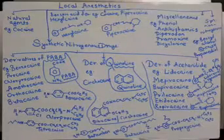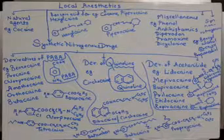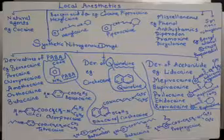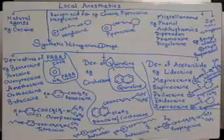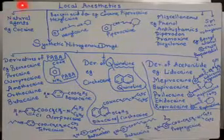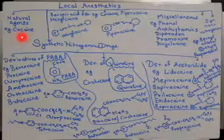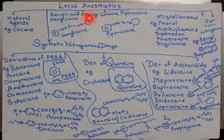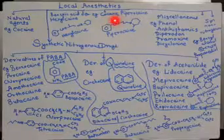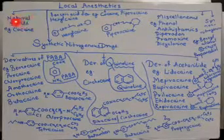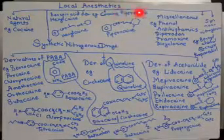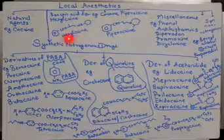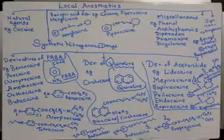Good morning dear students. Let's start with a new chapter on local anesthetics. The classification includes natural agents — for example, cocaine — and benzoic acid derivatives, which include cocaine (of natural origin), piperocaine, and hexylcaine.